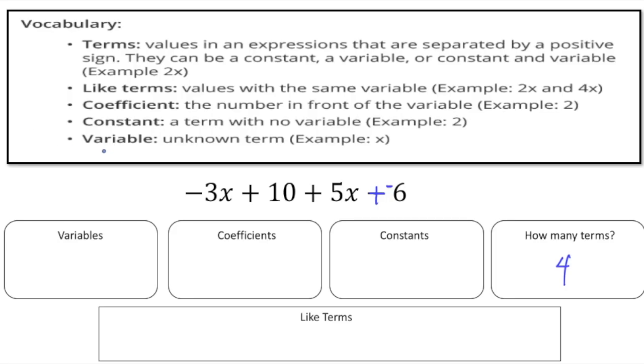Now let's go down to variable. A variable is an unknown term. So here we have x, or really any letter is a variable. So the variable in this expression is x. Sometimes you might have more than one variable. It could be an x and a y, or it could be an a and a z. It can be anything.